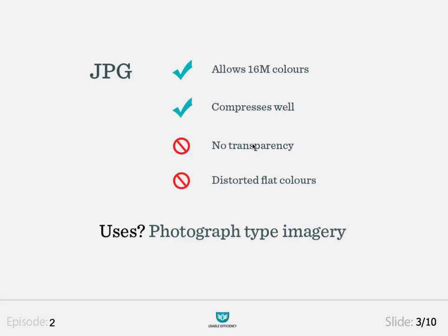The second image format is JPG or JPEG. The main advantage of JPEGs is that they allow a large amount of colours — 16 million in total. A second advantage is that the images compress very well into low file sizes. Unfortunately there is no transparency with JPEGs and they do not convert well into flat colours, so for logos or icons you would have to save the file at a very high size to get a clear and crisp image.